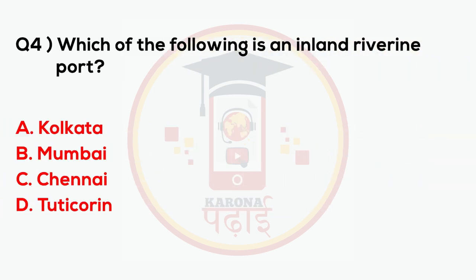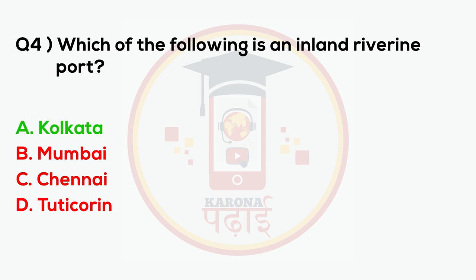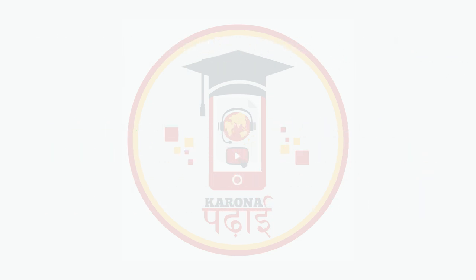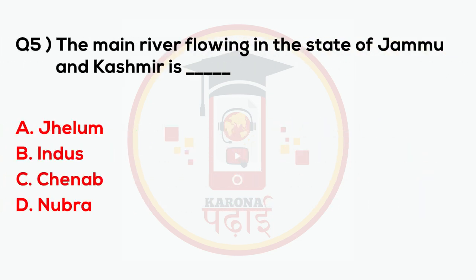Which of the following is an inland river? The city of Kolkata is associated with a major river. The main river flowing in the state of Jammu and Kashmir is which of the following?